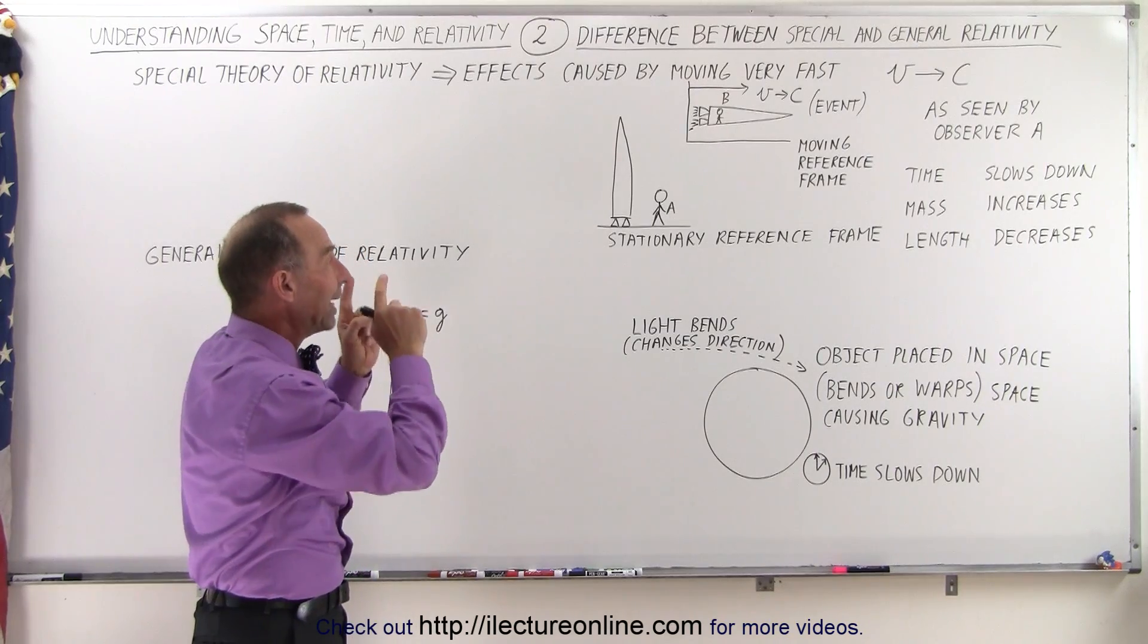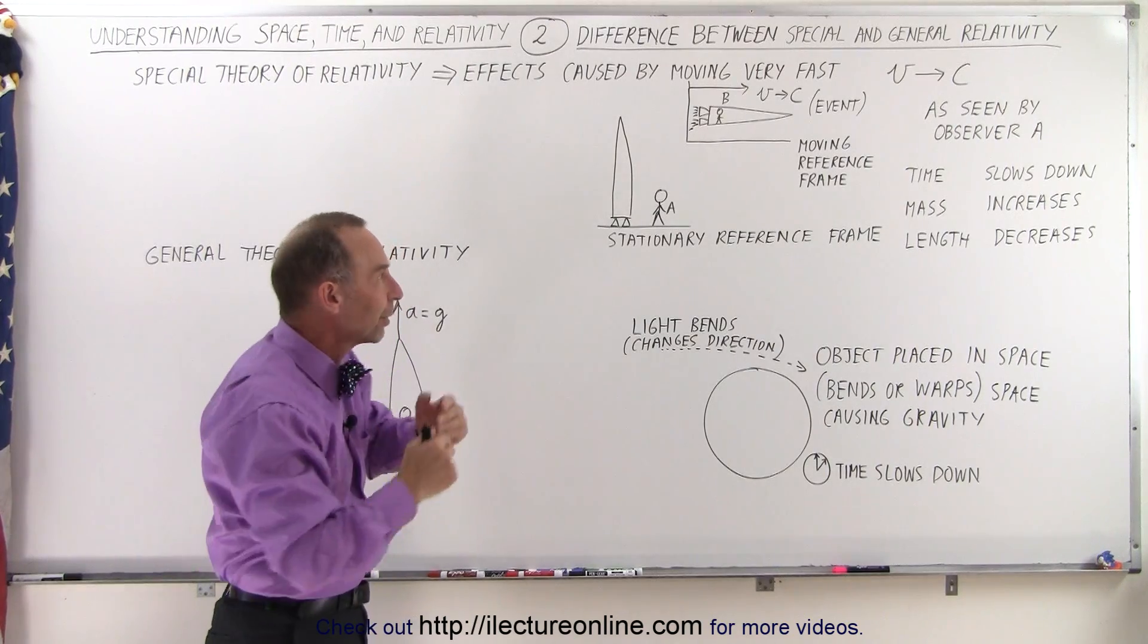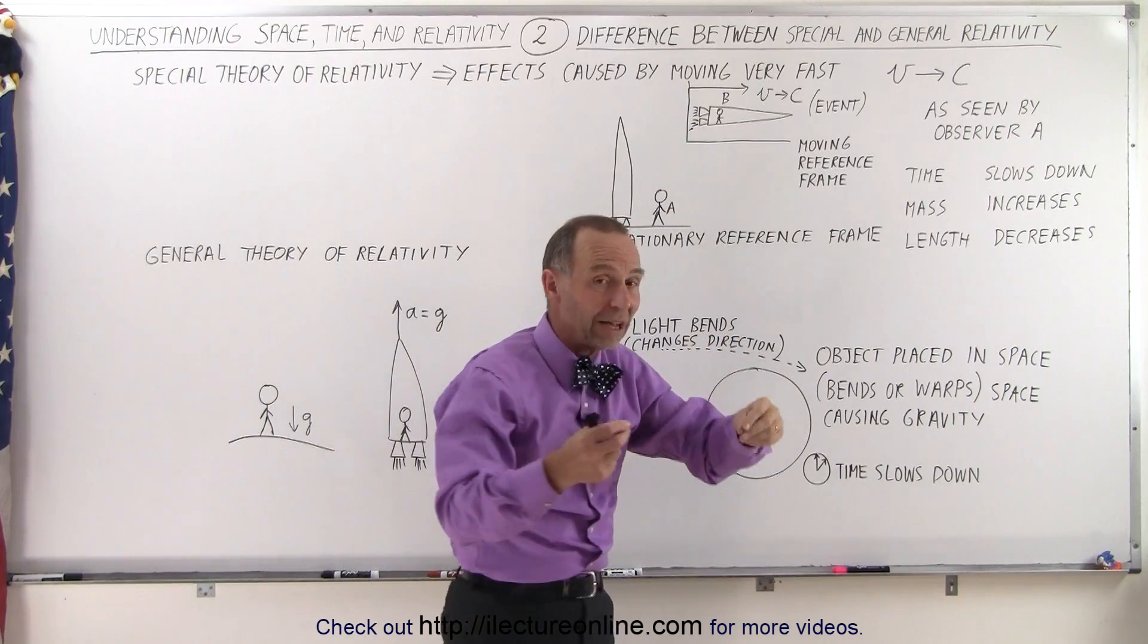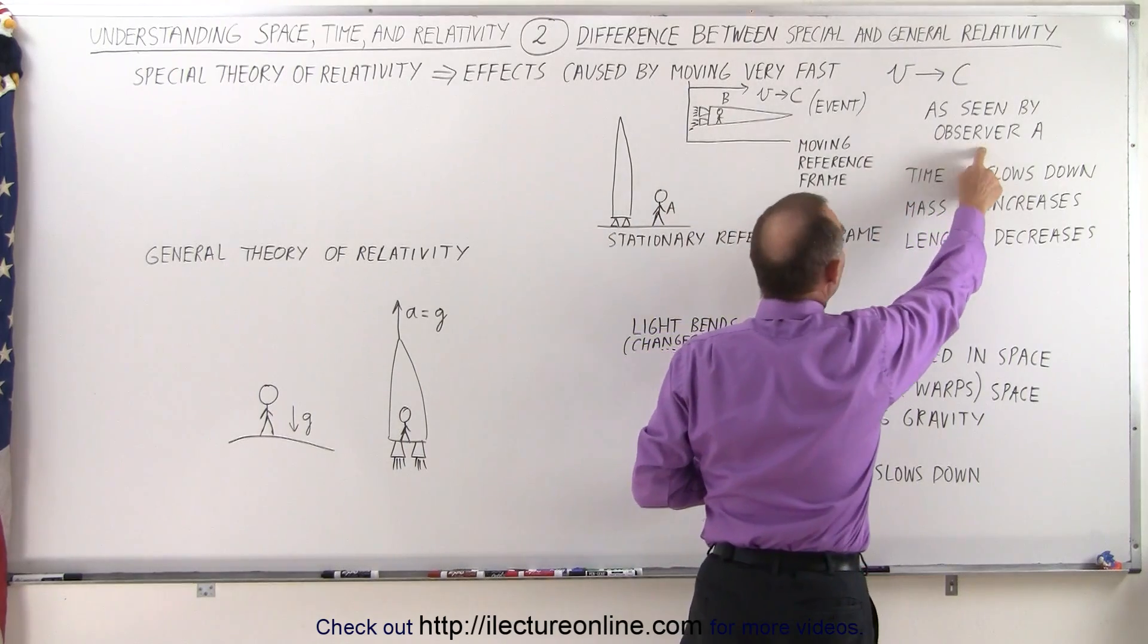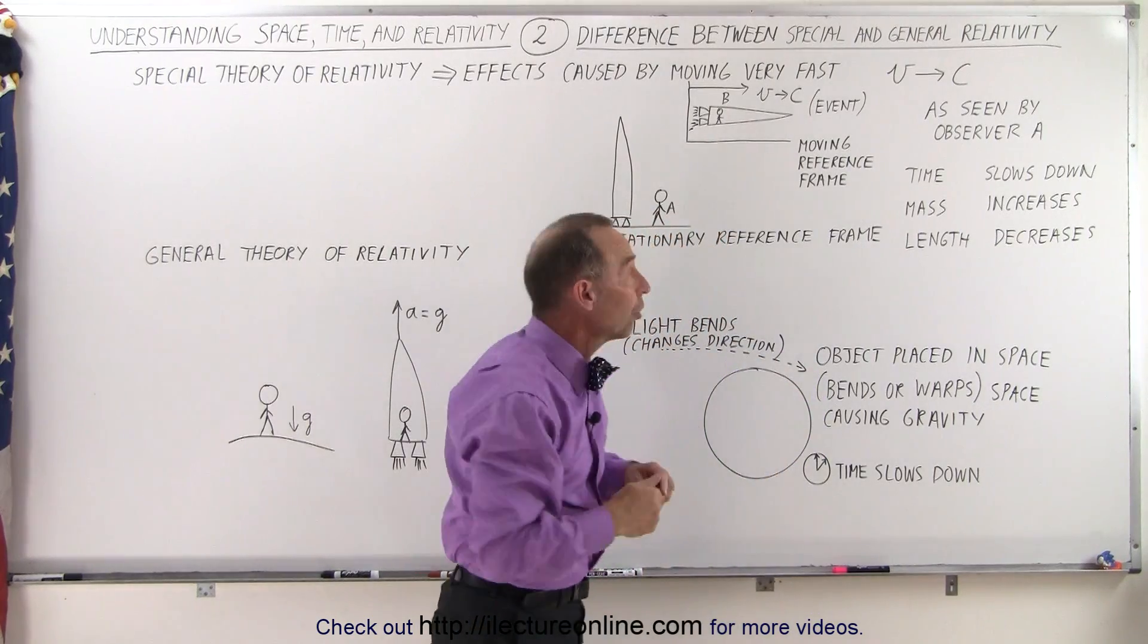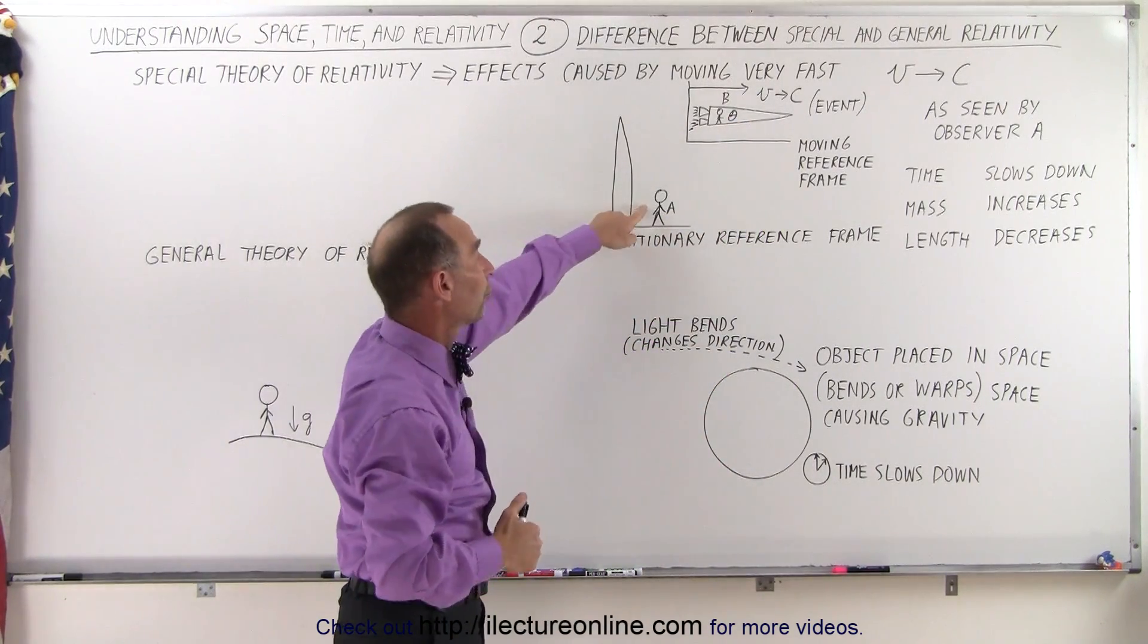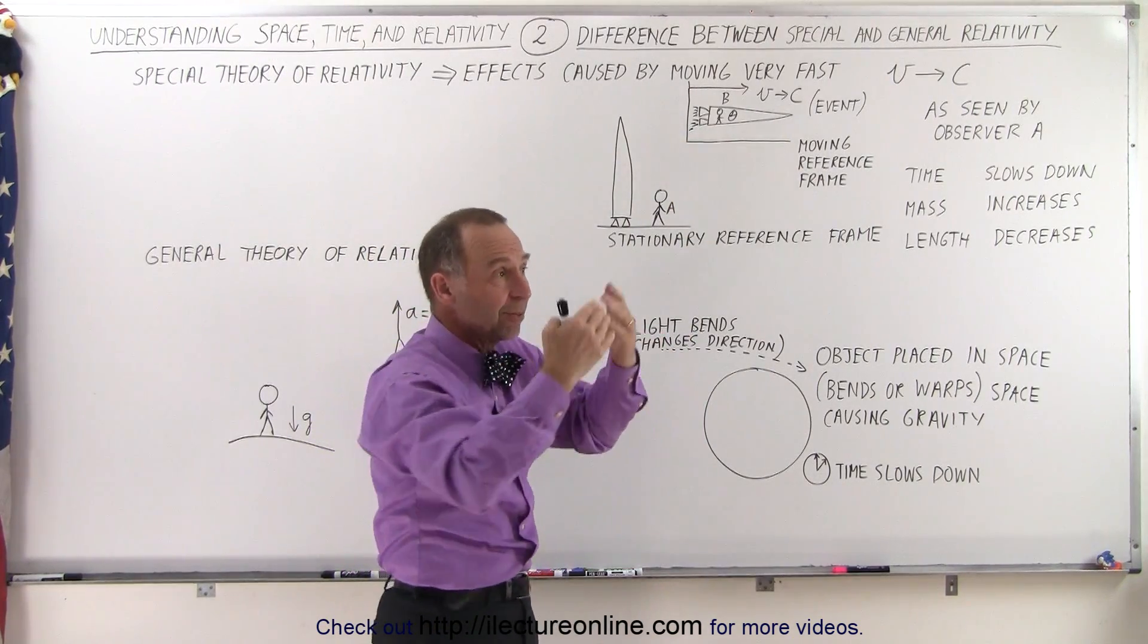But what happens now? Well the way Observer A sees things and the way Observer B sees things now become different. They now become relative, because they're now in a different reference frame. What Observer A sees as happening on this event versus what Observer B sees, who is actually on the event itself, is going to be different. For example, as seen by Observer A, the time in this event, the time in this spaceship, actually slows down. So let's say there's a clock on the spaceship, and Observer A can take a look at that clock. That clock will appear to be moving really slowly, according to Observer A. But according to Observer B, they will look at the clock and see absolutely no difference. The clock seems to be just quite normal.